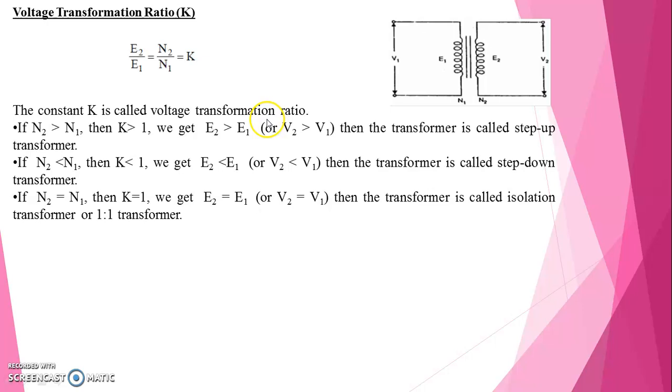The constant k is called voltage transformation ratio. If N2, number of turns in secondary, is greater than N1 then k is greater than 1. We get E2 is greater than E1 or V2 is greater than V1, then the transformer is called step up transformer.